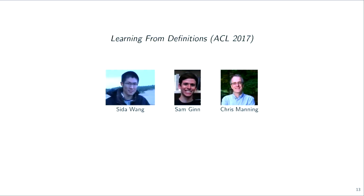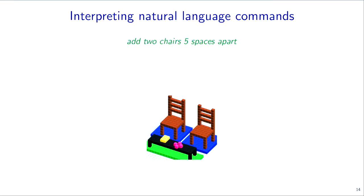I'm moving on to a second topic: learning from definitions. Imagine building a natural language interface for a graphic designer so you can create scenes by just using natural language — for example, 'add two chairs five spaces apart,' and it produces a beautiful rendition. In this setting, you're working with voxels — small building blocks, almost like Minecraft — and trying to build elaborate scenes out of very small building blocks. Going from something high level like adding two chairs to the minute details needed to execute the scene is a pretty hard problem, and existing methods would completely fail.